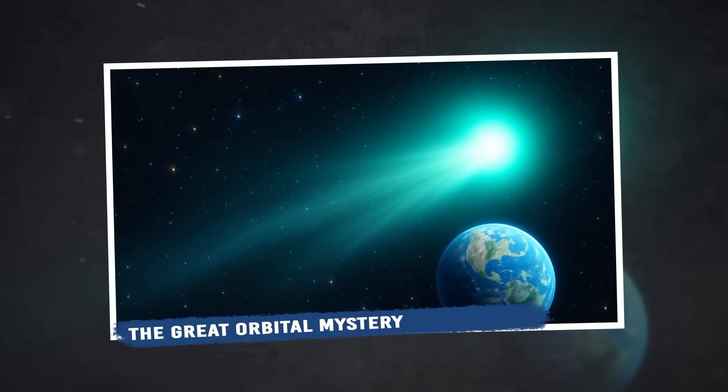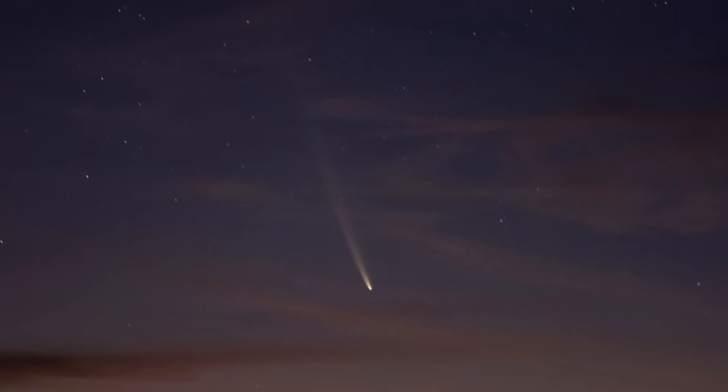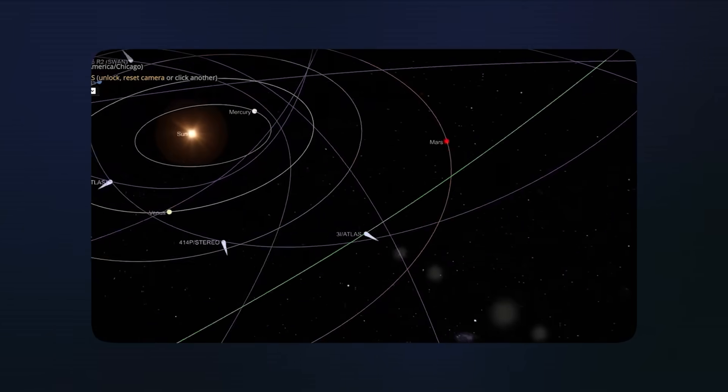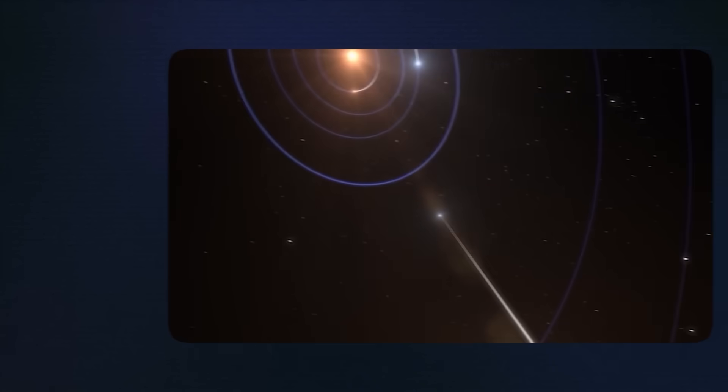The Great Orbital Mystery. Here's where things get really weird. When astronomers find a new comet, the first thing they want to know is where it came from and when it will come back. With most comets, this is pretty straightforward math. You track the comet for a few weeks, measure its position very carefully, and calculate its orbit. But SWAN is being a real troublemaker.